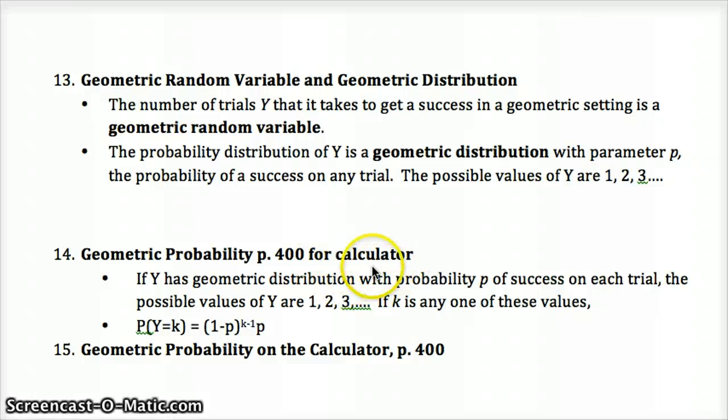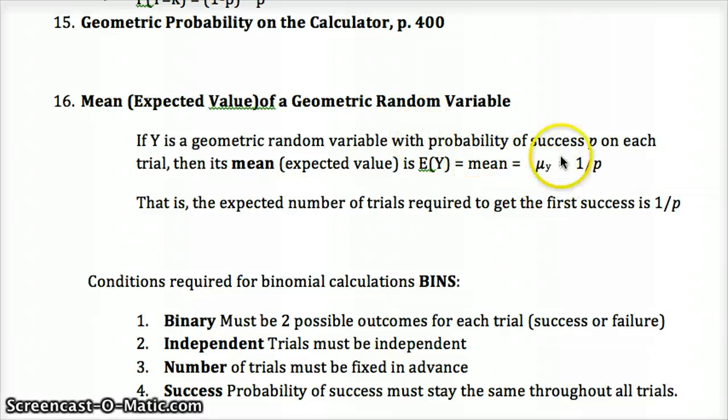Page 400 has this for your calculator. It's also on your calculator function handout that I gave you. In geometric PDF, GeoPDF and GeoCDF work very much the same as binomial PDF and binomial CDF, except for now it's only for a geometric variable. The probability that Y equals a certain number equals one minus the probability of the outcome to the K minus one times P, the probability that it does occur. To find the expected value or the mean of a geometric random variable, we just divide one over the probability of success. So that will tell us the number of trials we would expect to have to get one success.